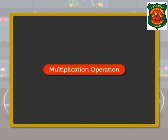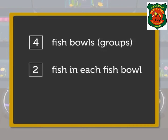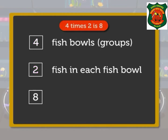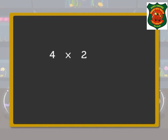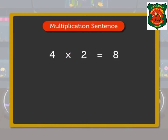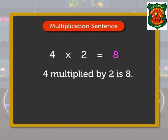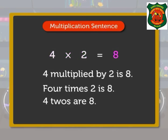We can do this multiplication operation in an easy way. There are four fish bowls, each bowl has two fish in it. Now, four times two is eight, so there are eight fish in all. Using the multiplication symbol, we write this as a multiplication sentence: four multiplied by two is equal to eight, or four times two is eight, or four twos are eight.